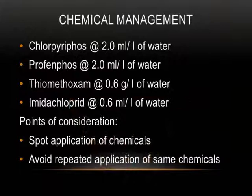The chemicals used for effective management of mealybug are: chlorpyrifos at the rate of 2 ml per litre of water, or profenofos at the rate of 2 ml per litre of water, or thiamethoxam at the rate of 0.6 g per litre of water, or imidacloprid at the rate of 0.6 ml per litre of water. Spot applications of chemicals are more preferred, and repeated applications of the same chemical should be avoided.